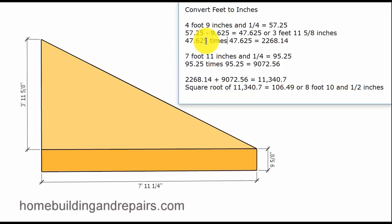Forty seven point six two five times forty seven point six two five equals two thousand two hundred and sixty eight point fourteen. We are going to put that number down here and then add it to this number once we get it by multiplying these two numbers together.